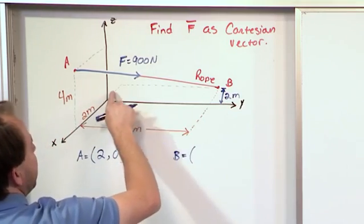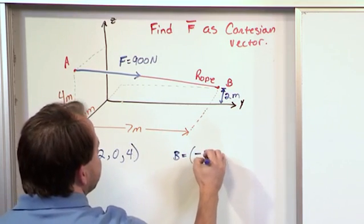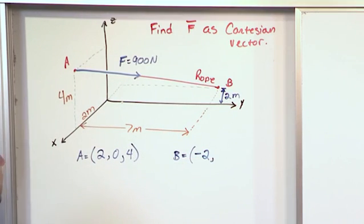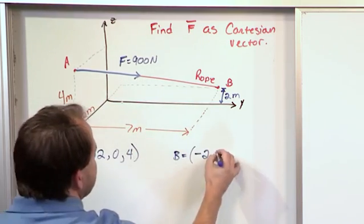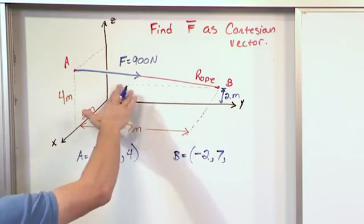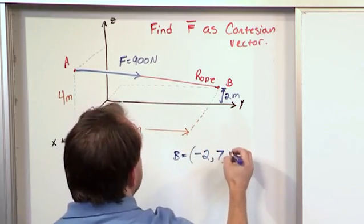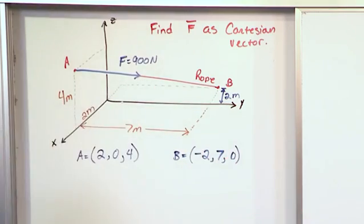So this distance right here in the negative X direction is negative 2. So we have negative 2, that's the X component. The Y component is how far we travel this way, which we have labeled here as 7. And the Z component is 0 because it's lying in the XY plane.